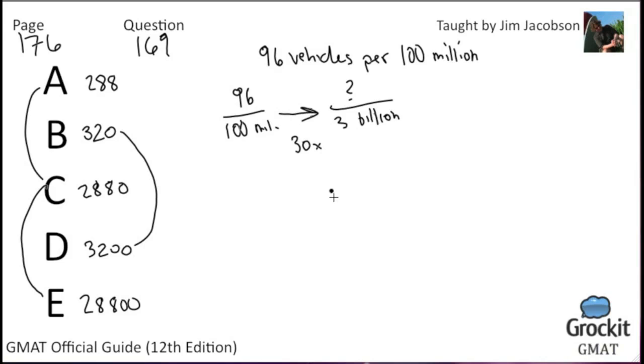It is, in fact, 30 times that number. So if we do 30 times the numerator and the denominator, we will end up with our mystery guessed number of vehicles. So 96 times 30 equals 2,880. Answer choice C.